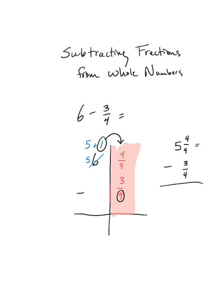You'll notice that five and four-fourths is the same thing as six, so it's not like we have changed our problem — we have just regrouped it. So now I'm ready to subtract. I'm going to take my four-fourths, subtract three-fourths, which gives me one-fourth. And I'm going to take my five wholes, subtract no wholes, and get five wholes. So my answer to this problem is five and one-fourth.